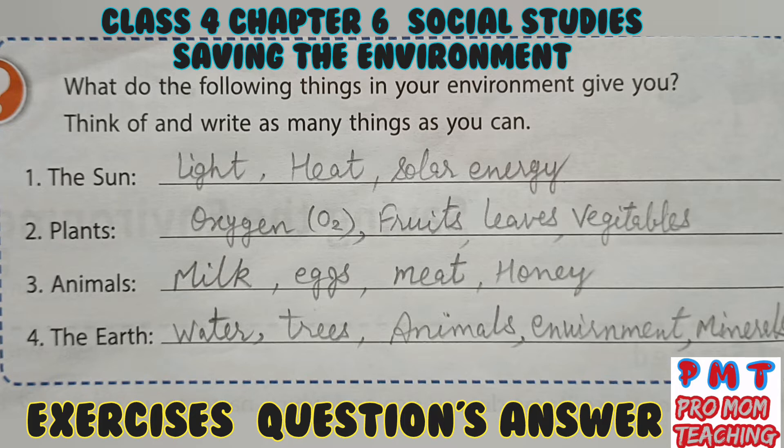Third, animals provide us milk, eggs, meat, honey, etc. Fourth, the earth provides us water, trees, animals, environment, minerals, etc.